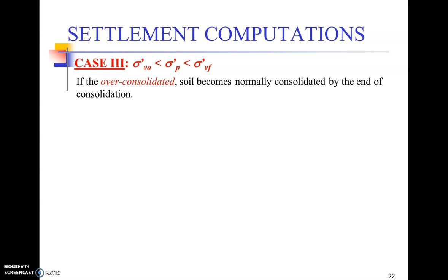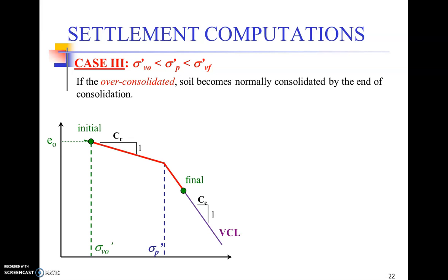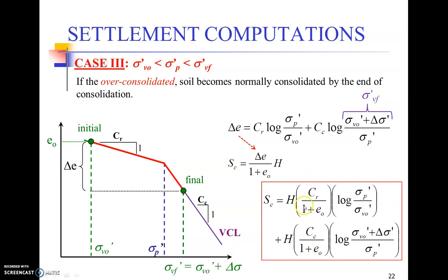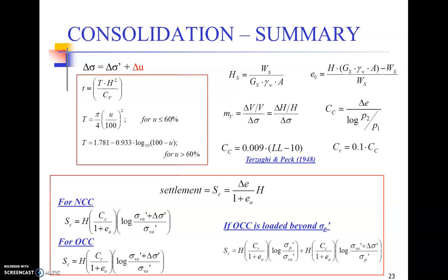The last case is an over-consolidated soil where the final load crosses the pre-consolidation pressure, making the soil normally consolidated by the end of consolidation. We have now crossed the pre-consolidation point and deal with two different curves or slopes. The formula now uses both Cc and Cr together. The final stress on the middle of the soil layer is beyond the pre-consolidation pressure, so both slopes are used in the settlement computation.